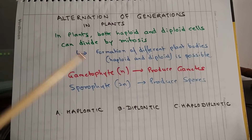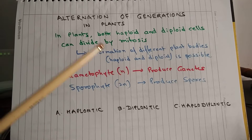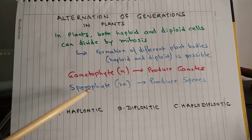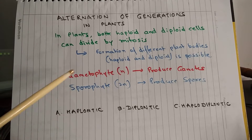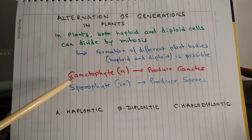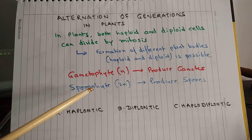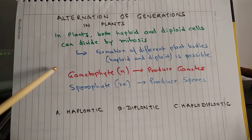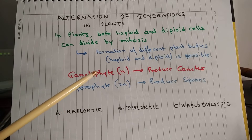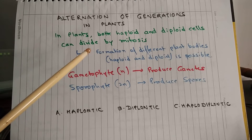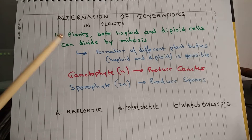Now, in different groups of plants, the relative length and interdependency or independence of gametophyte and sporophyte phase is different. In the videos I have made on algae, bryophytes, pteridophytes, gymnosperms, and angiosperms, I have already talked about alternation of generation specific to each group. This lesson is about the overall picture of alternation of generation in the plant kingdom.